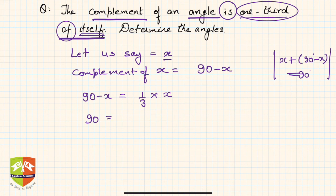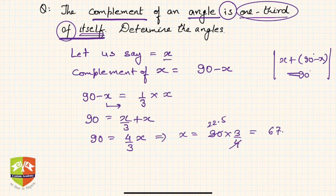So you just need to solve this. 90 equals x upon 3 plus x, if you take this x on that side. So 90 is equal to 4 by 3 x after taking LCM. So hence x is 90 into 3 upon 4, which is 67.5 degrees.